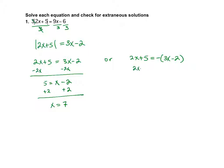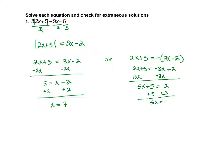So 2x plus 5 equals negative 3x plus 2. I'm going to add 3x on both sides. So 5x plus 5 equals 2, then plus 5 on both sides. So 5x equals 7. And I'm just going to divide by 5, so x equals 7.